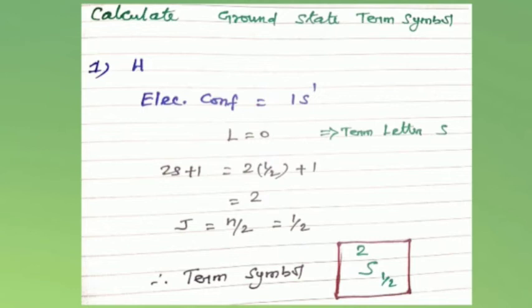Using the term symbol formula L-J with superscript 2S+1: L=0 gives term letter S, J=1/2, and 2S+1=2. Therefore the term symbol is ²S₁/₂.